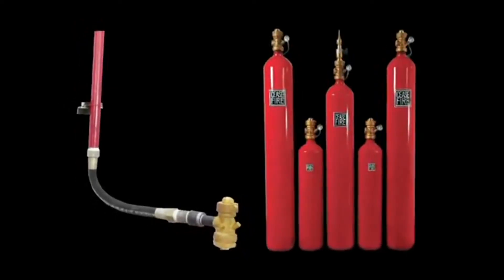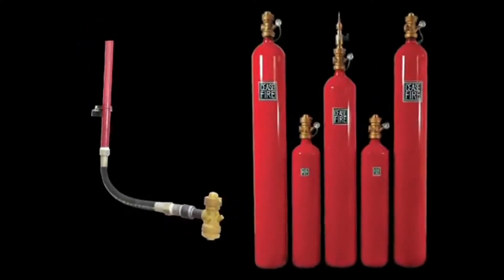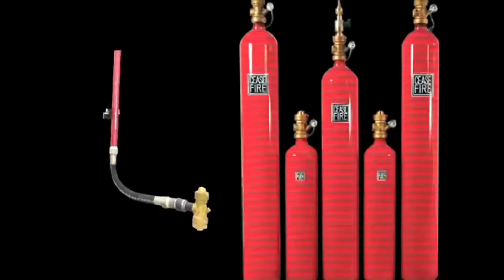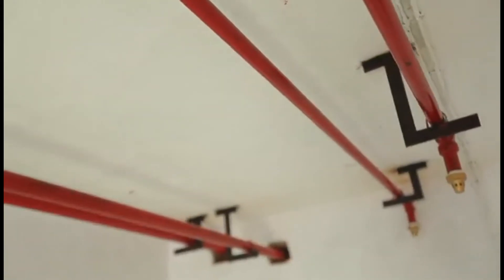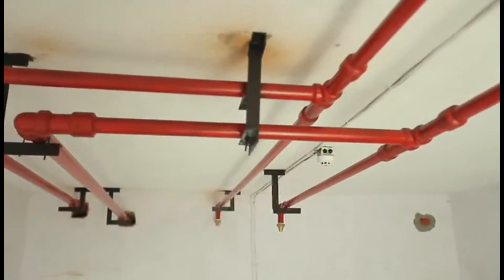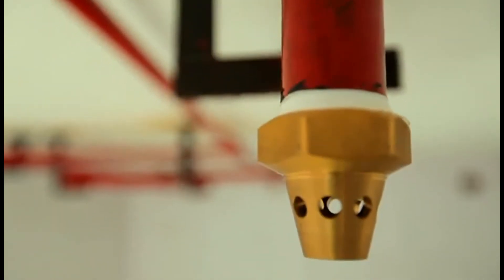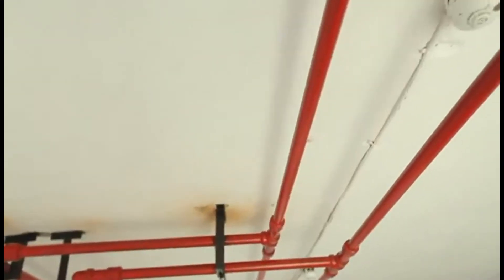Once activated, the specially designed valve discharges FM 200 extinguishing agent. The FM 200 makes its way down high quality pipes and eventually to the customized discharge nozzles. FM 200 reaches the brass nozzles that have been specially designed according to the area's requirements and ensures maximum effectiveness in dispersal of the agent.